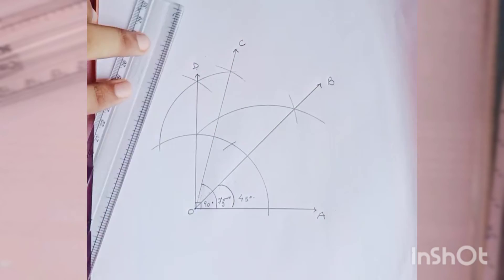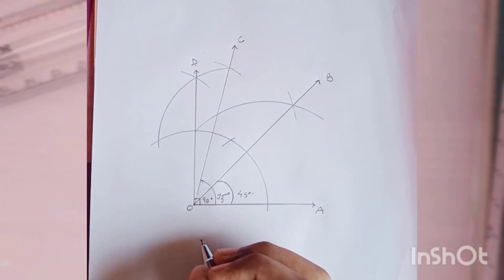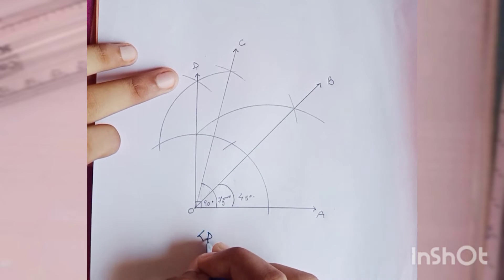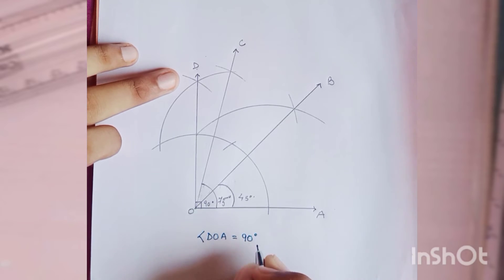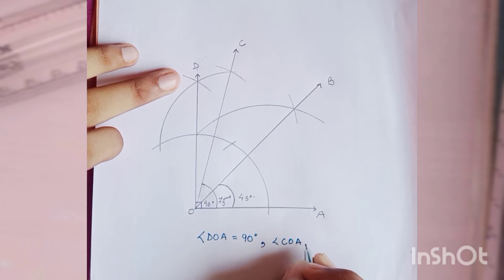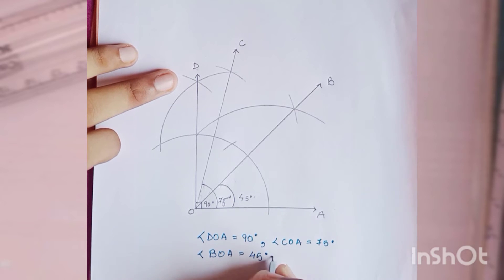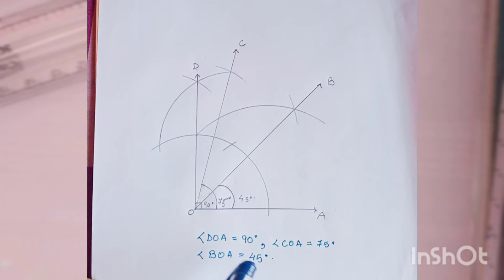So angle DOA is equal to 90 degrees. Then angle COA is equal to 75 degrees. And angle BOA is equal to 45 degrees.